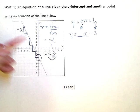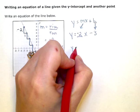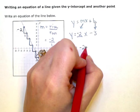So this is negative two. So my final equation is y equals negative two x minus three.